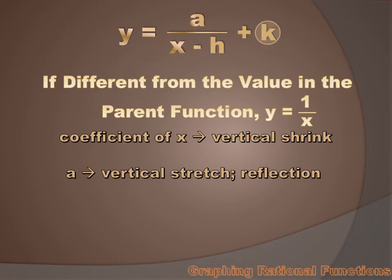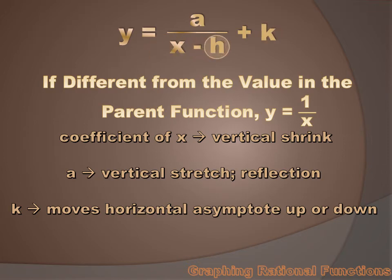How about changes in k? They move the horizontal asymptote either up or down. If k is positive, that's going to raise the asymptote up to the k value. If k is negative, it's going to drop the asymptote. And changes in the h value move the vertical asymptote either left or right.